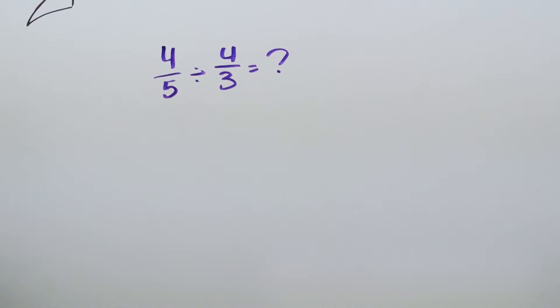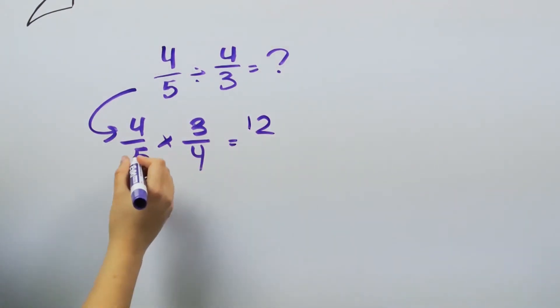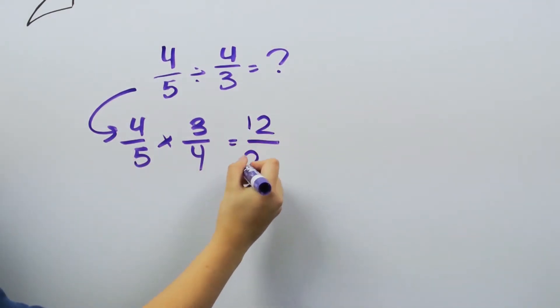Working with just numbers, let's say that we had 4/5 divided by 4/3. What we would do is take the 4/5, flip the 4/3 upside down, giving us 3/4, and then multiply through. So we have 4 times 3 on the top, giving us 12, and then 5 times 4 on the bottom, giving us 20.